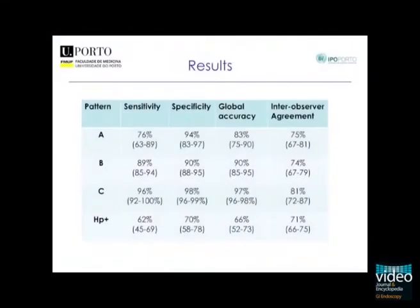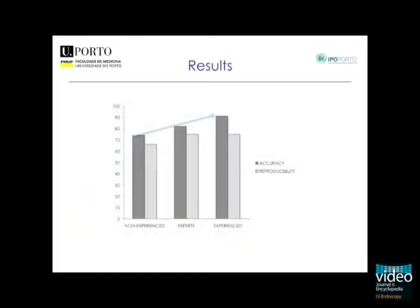This classification presented an accuracy of more than 90% for the diagnosis of metaplasia and dysplasia, with weaker results for H. pylori gastritis. A learning curve may exist for this technique, since the global accuracy increased from 70% in non-experienced to 90% in experienced observers.